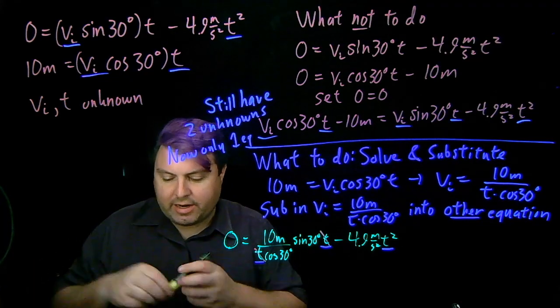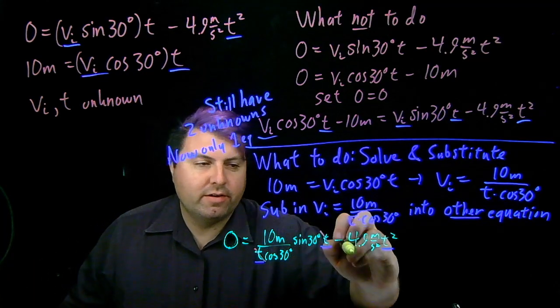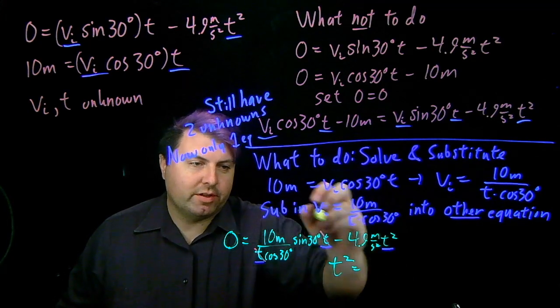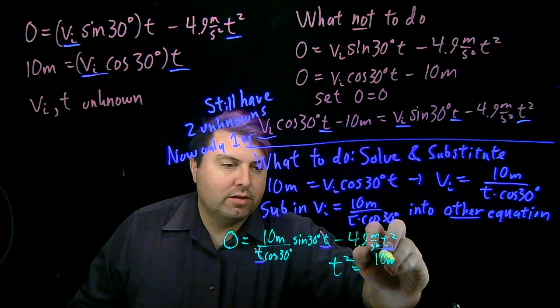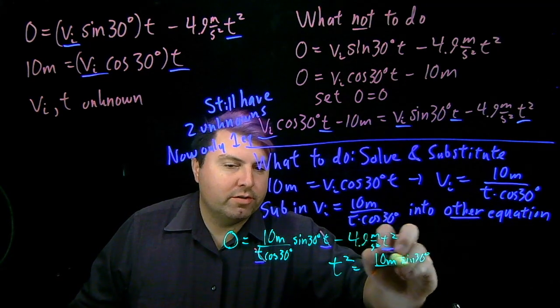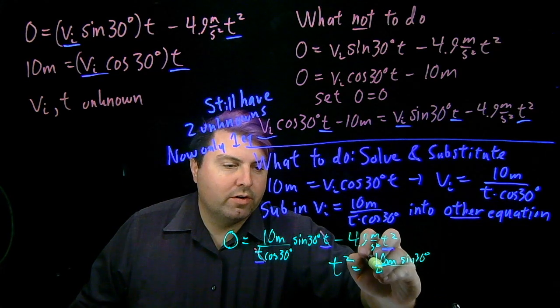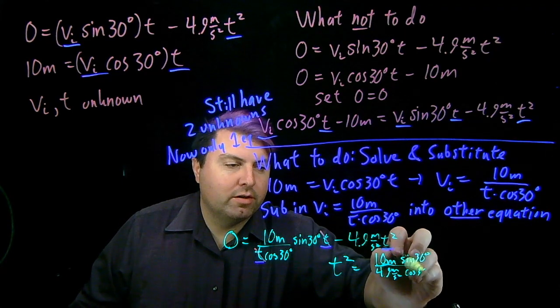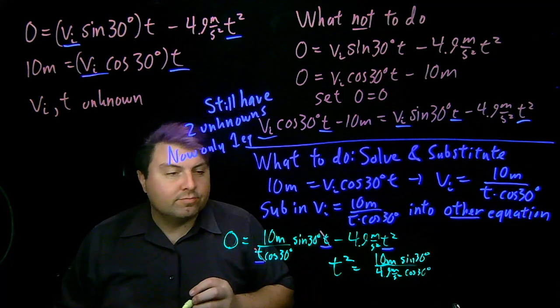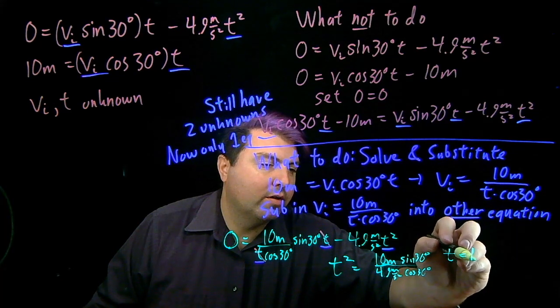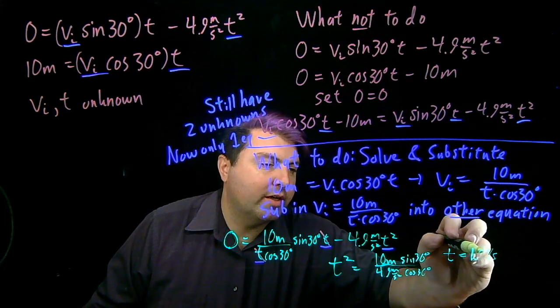So when I do that now, then I have my t² is equal to, bringing this over and then dividing, 10m sin 30° / (4.9 m/s² cos 30°). And if I solve for this, then I will get my t is 1.08 seconds.